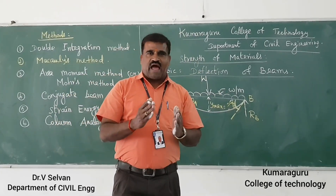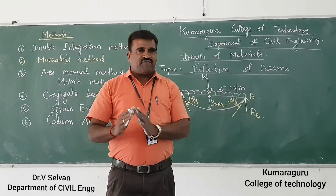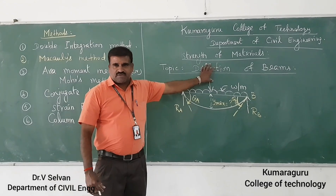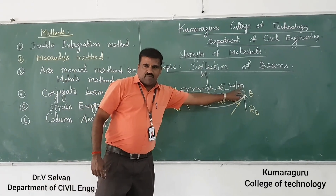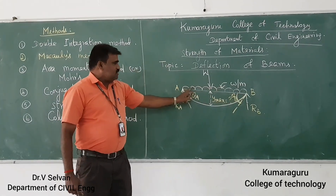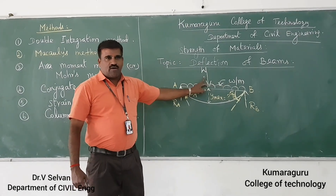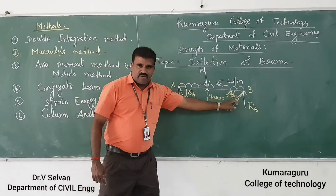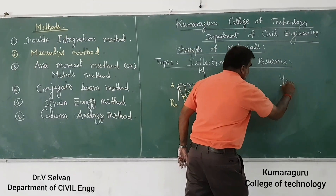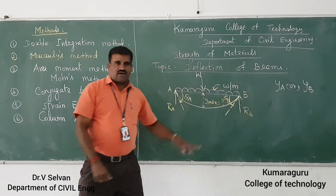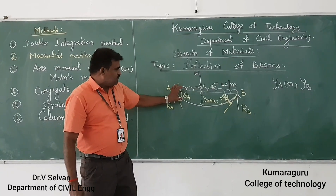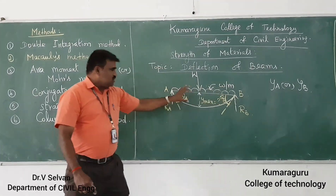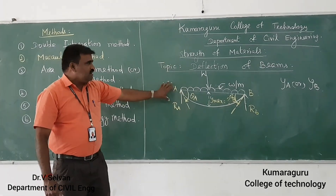Normally the deflection of beams is limited to span divided by 250 to 300, where L is the span of the beam. For a simply supported beam supported at A and B, with either a UDL or a point load or in combination, you will get slopes called theta A and theta B, or notated as yA or yB. And you can also find the deflection at any point on the beam, whether at L/2, L/4, or 3/4 of L.